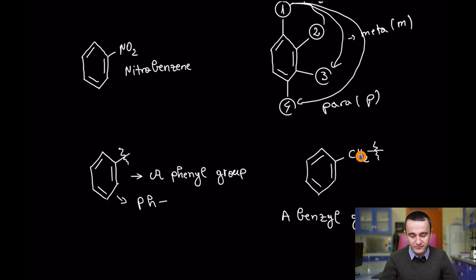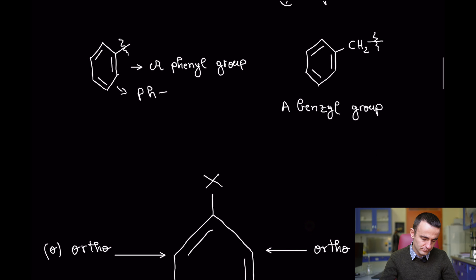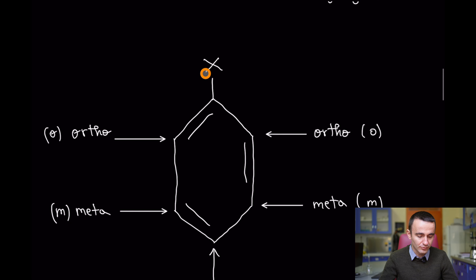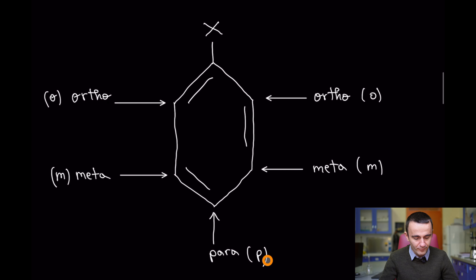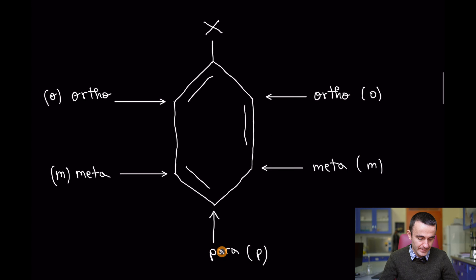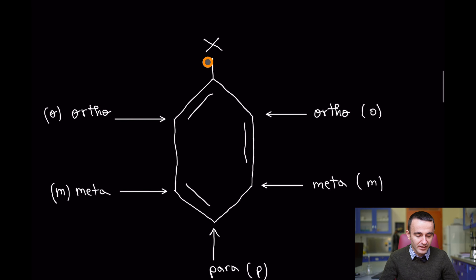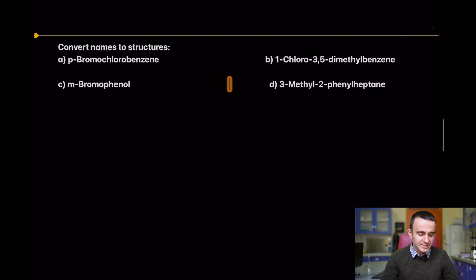If you leave a CH₂, it is called the benzyl group. In terms of position relative to a substituent on the ring, ortho is both adjacent sides, then meta, then para. Keep in mind these positions are used in naming only when you have two substituents.